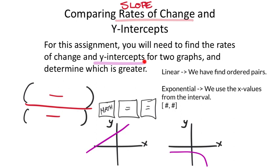Looking for y-intercepts on two graphs, I can see this one in orange on the left and this one in orange on the right. To determine which one's greater, it's really meaning which one is higher on the graph. From these two graphs, this y-intercept compared to the one on the right is higher, so this one has a greater y-intercept.